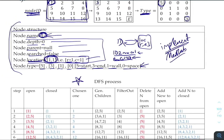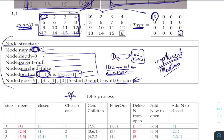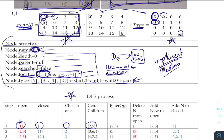We start at node S, which is node 1. The closed set is empty and the chosen node is 1. We generate the children: 2 and 5. We filter out walls and nodes we have searched before. Nodes 2 and 5 are not walls and haven't been searched, so we keep them. We delete node 1 from open and add the new children to open.